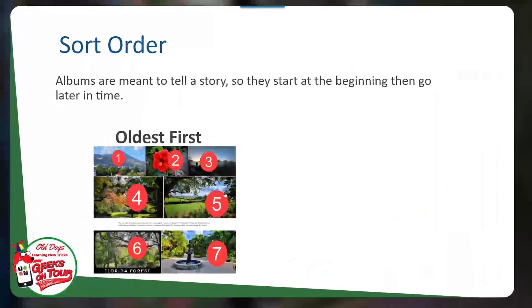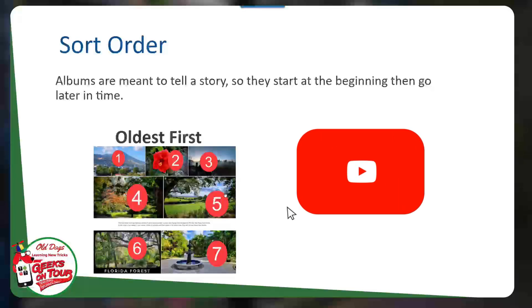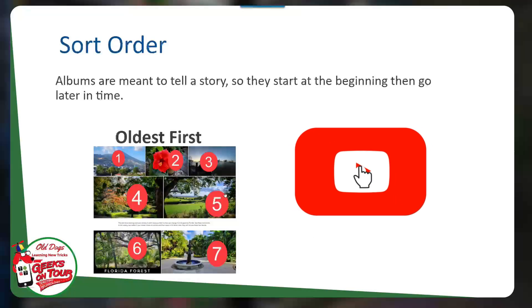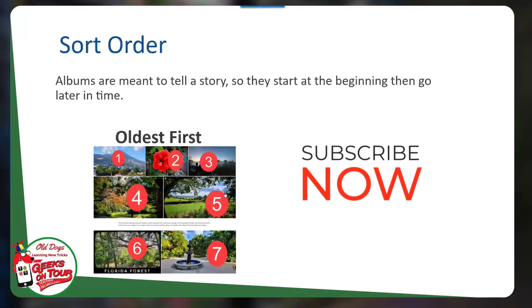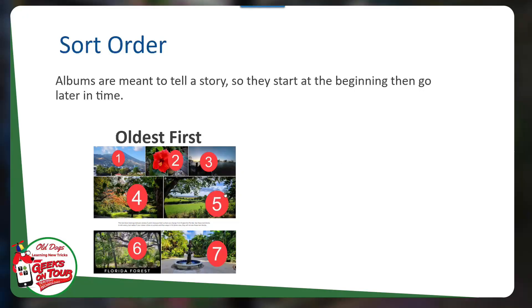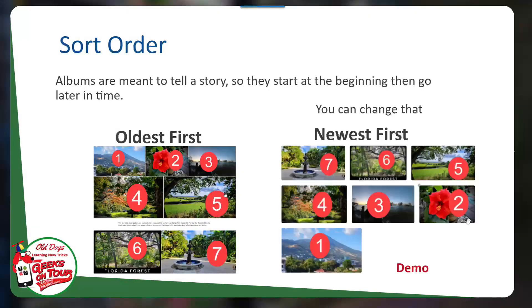If you're in oldest first, it means the earliest picture, number one, is on top and it goes to the next, the next, the next. But you can change that. You can make it newest first, which means number seven is on top through to the earliest, number one.